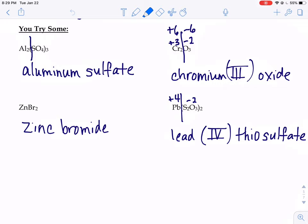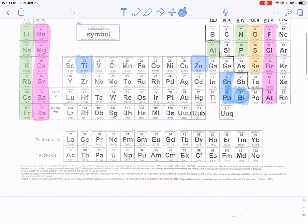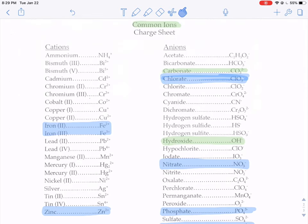For that Cr2O3, we're going to need a Roman numeral for that one, because based on where chromium is on the periodic table, chromium is in the center right here. You can't just say chromium. We don't know what the charge of the chromium is based on where that chromium is located. So when we look at our charge sheet, you could see chromium could be plus two or plus three. We have to figure out which kind of chromium we've got in this problem.